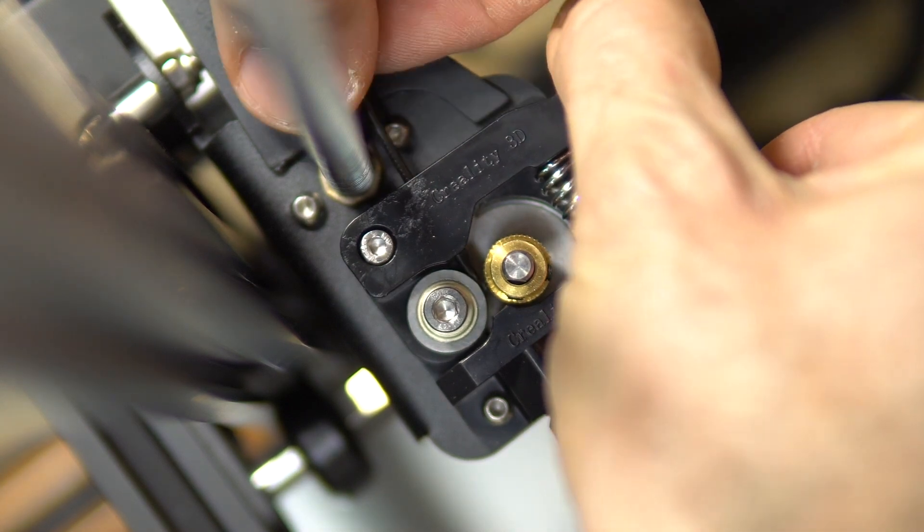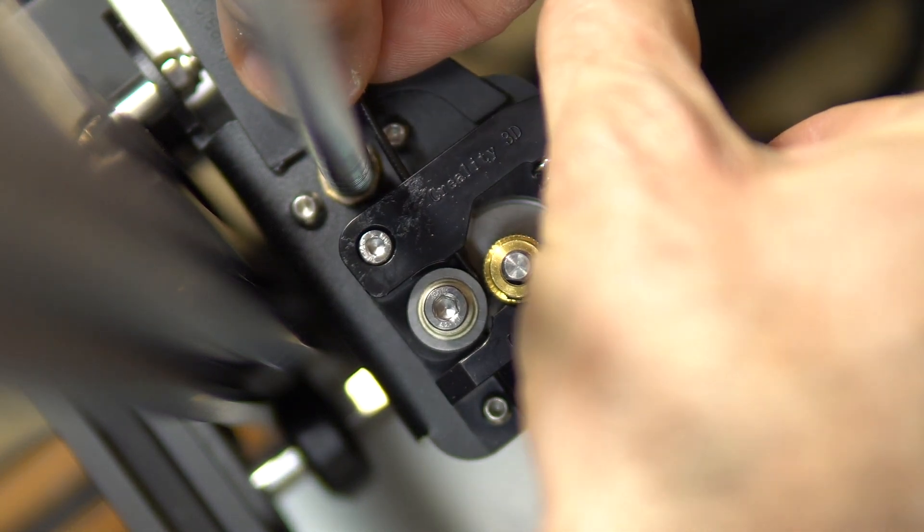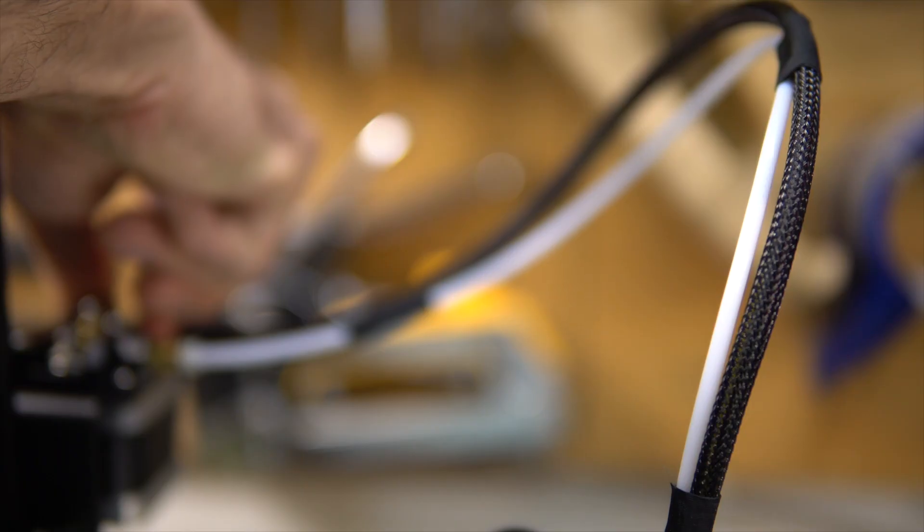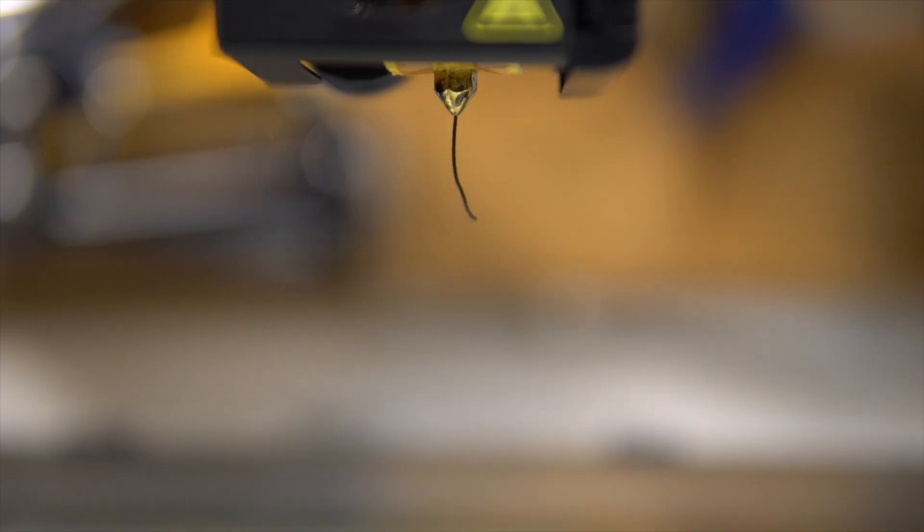And test if it's extruding well this time. And if you look at the first millimeter, it's going straight down, so it means it's not clogged.